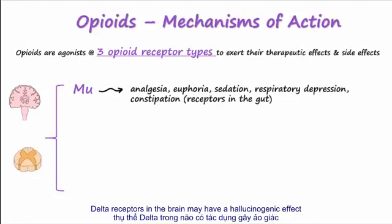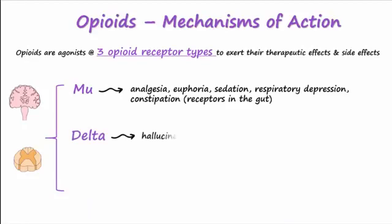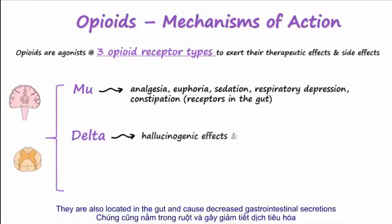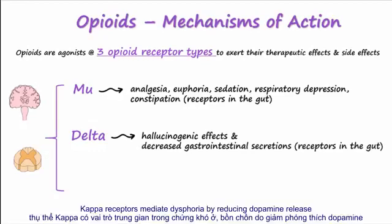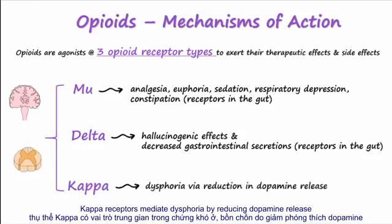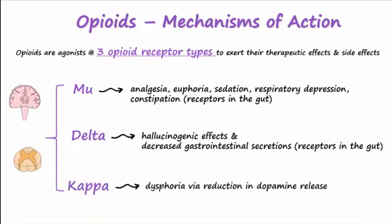Delta receptors in the brain may have a hallucinogenic effect. They are also located in the gut and cause decreased gastrointestinal secretions. Kappa receptors mediate dysphoria by reducing dopamine release.